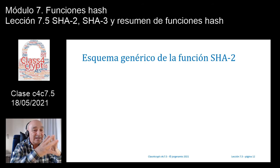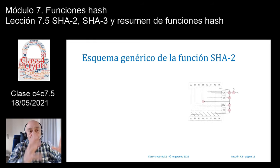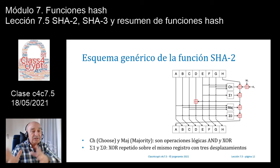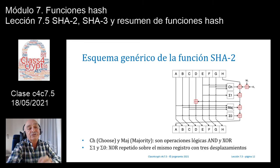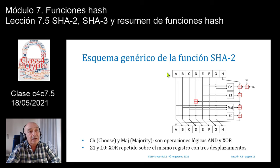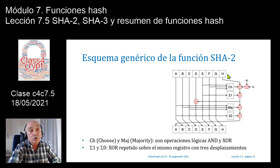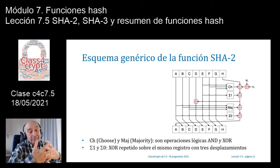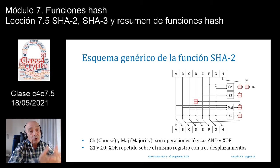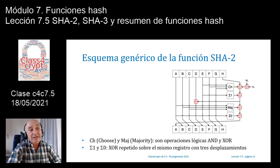El esquema genérico de cómo trabaja SHA2 es único —no hay un esquema distinto para SHA256 y SHA512—. Tenemos un conjunto de vectores o palabras: A, B, C, D, E, F, G y H, evidentemente 8 palabras. Si trabajo con palabras de 32 bits me darían 256 bits; si trabajo con palabras de 64 bits, 8 por 64 me darían los 512 bits, con lo cual trabajamos en SHA256 o SHA512 respectivamente.